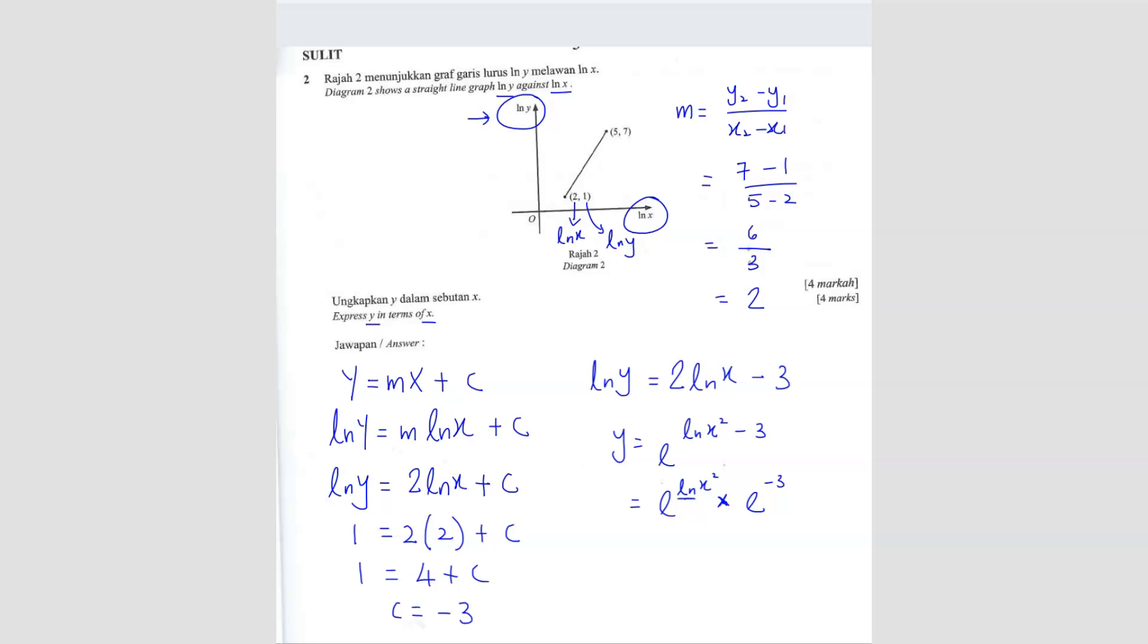You see, you know that ln is actually log e. If I write like this, you can actually cancel this. This one becomes 1. That's why I want to break it down, so that when I can eliminate the e and the ln together, I get x squared times, this one becomes 1 over e cubed.